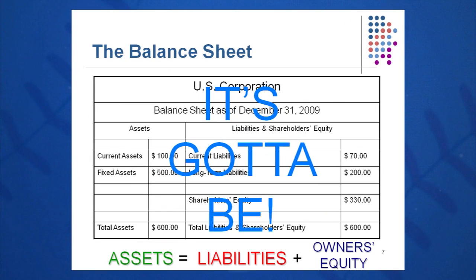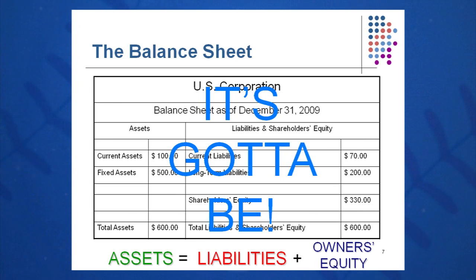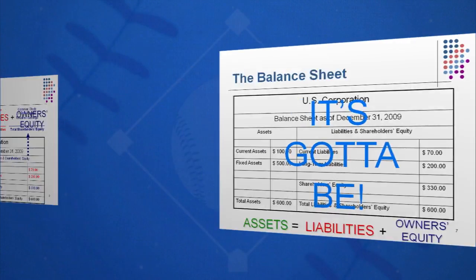The balance sheet is prepared on the last day — so in March it's March 31st, April it's April 30th, May it's May 31st, June it's June 30th, and so on. It includes assets, liabilities, and owner's equity, and it's got to balance before you leave work that day. Assets must equal liabilities plus owner's equity.